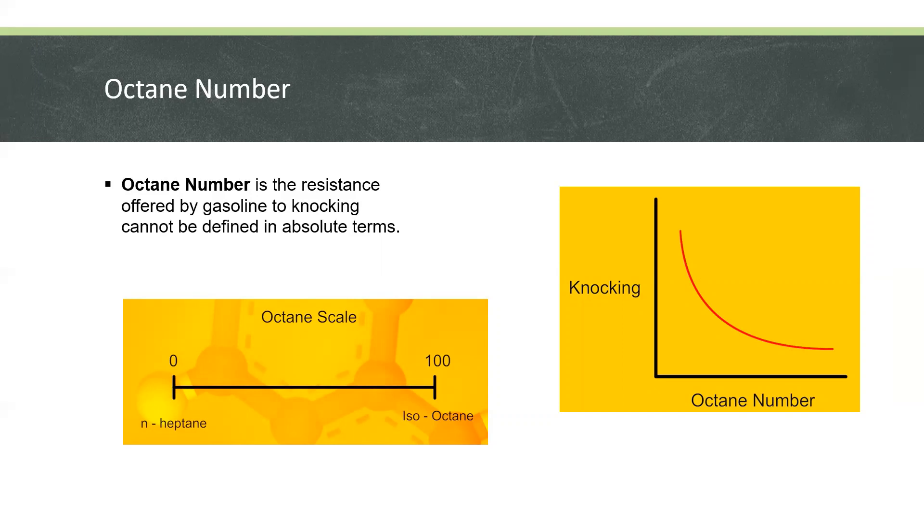If we have an octane number of 80, it has the same knocking characteristics as a mixture of 80% iso-octane and 20% n-heptane. Ideally, we want an octane number for our fuel to be near 100.